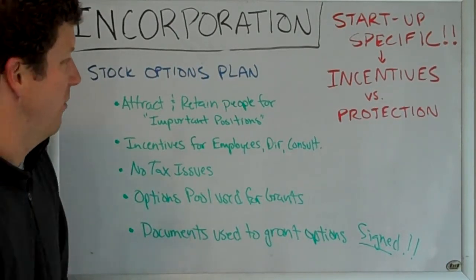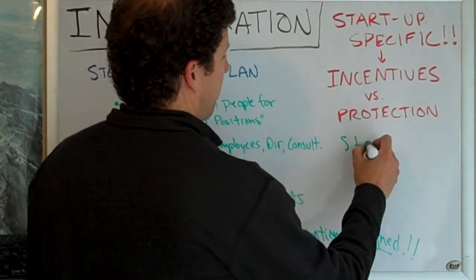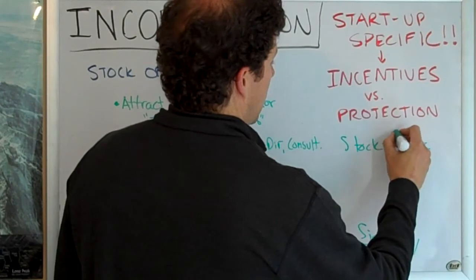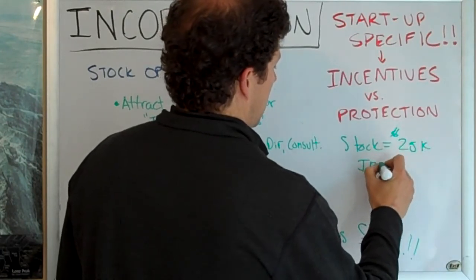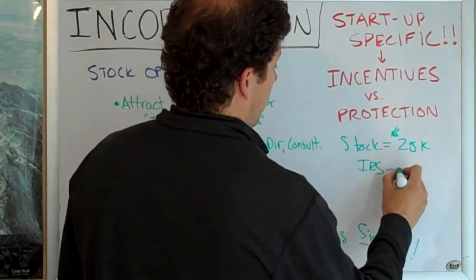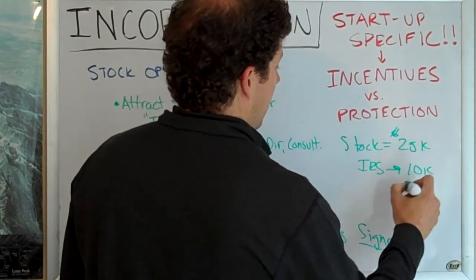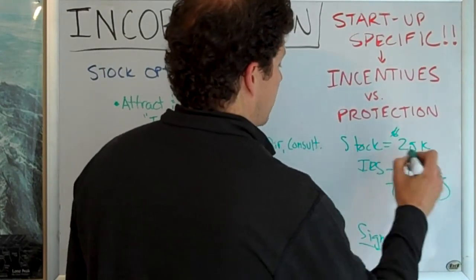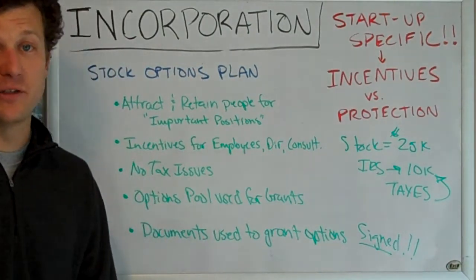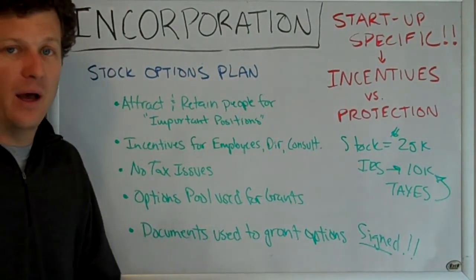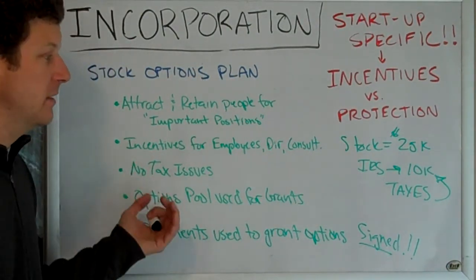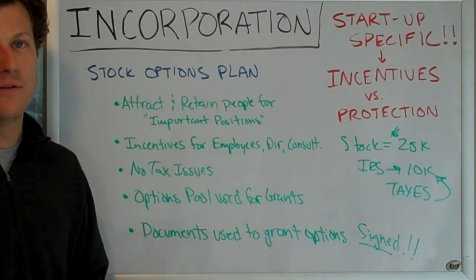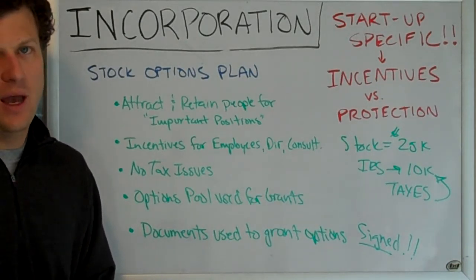If you give someone stock worth $25,000, the IRS wants around $10,000 of it as taxes. That's bad — it's a poor way to incentivize employees because you're giving them a tax liability. Options don't carry that tax liability because options are the right to own stock in the future.